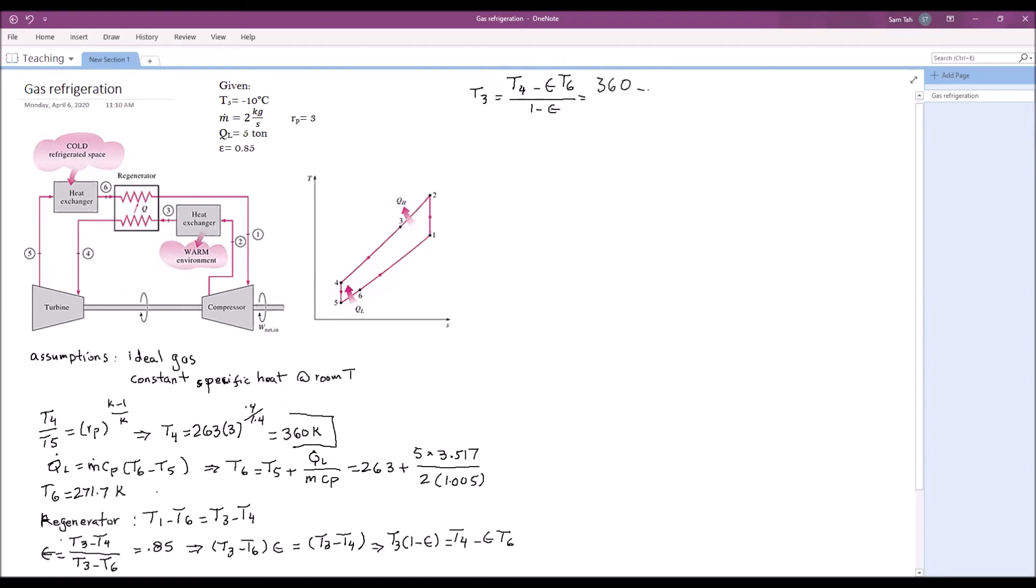T4 is 360 minus 0.85 times T6, which was 271.7, divided by 1 minus 0.85. That gives us a value for T3, 860.4 Kelvin. That's our T3.